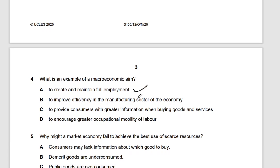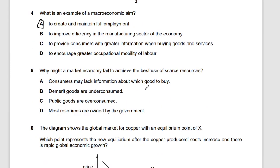Question four: what is an example of a macroeconomic aim? To create and maintain full employment — that is correct. The answer is A. The government should ensure that everyone has jobs. Question five: why might a market economy fail to achieve the best use of scarce resources? Humans may lack information on the goods to buy, and therefore market failure occurs.